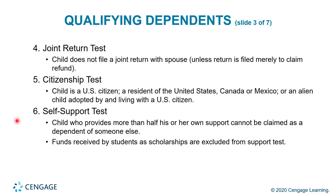The joint return test: the child does not file a joint return with a spouse unless the return is filed merely to claim a refund. In that situation, the person may not owe any taxes but had taxes withheld and didn't earn enough to be required to file — if they did file, they would receive all their money back, and sometimes they must file to get that money back. The citizenship test: the child is a U.S. citizen, a resident of the United States, Canada, or Mexico, or an alien child adopted by and living with a U.S. citizen. The self-support test: a child who provides more than half of his or her own support cannot be claimed as a dependent. Funds received by students as scholarships are excluded from the support test — this is very important.